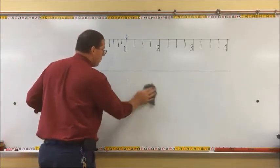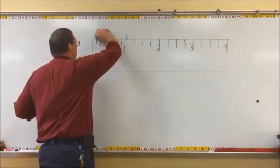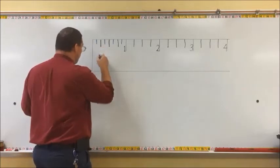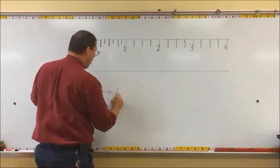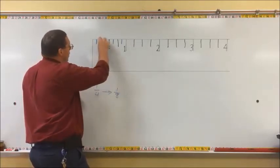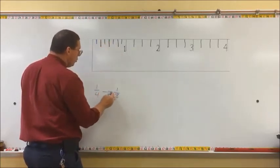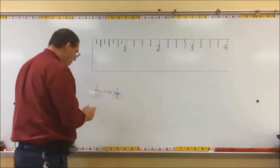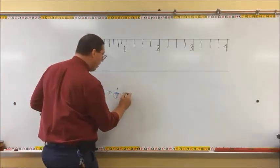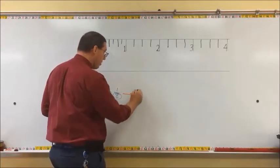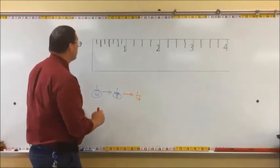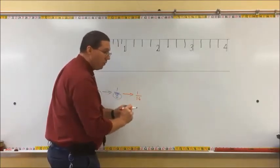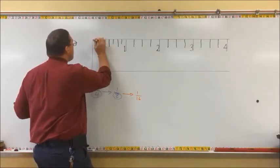Also notice that these were the one-fourth lines, and then we drew in the one-eighth lines. Every time we cut a distance in half, what we do is we double the denominator - so four doubled to eight. So now what we're going to do is put in the next level of line, which means we're going to double eight. What's eight times two? It's sixteen. So now we're going to put in the one-sixteenth hash marks. And because they're even smaller - the denominator got larger, so the piece got smaller - we're going to use even smaller hash marks.